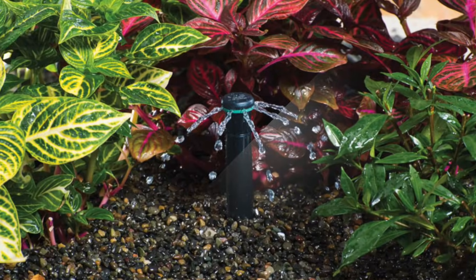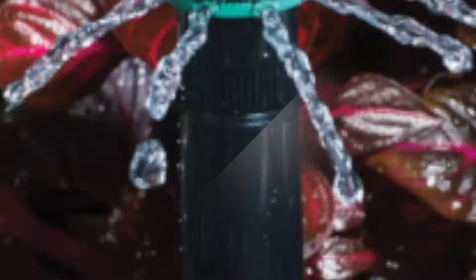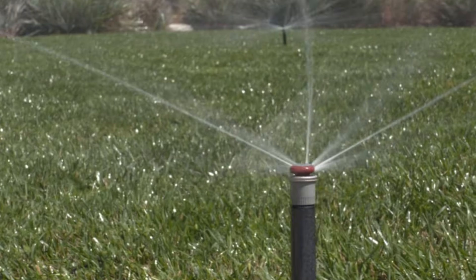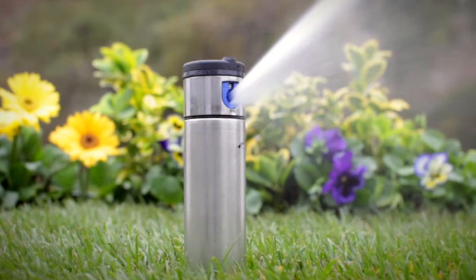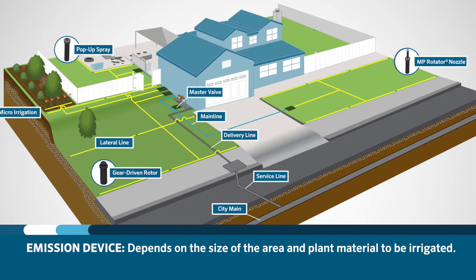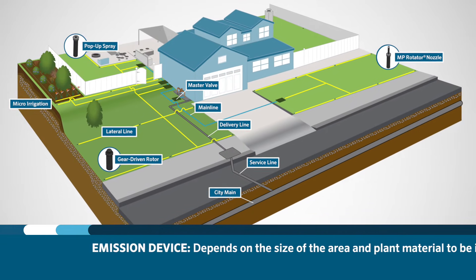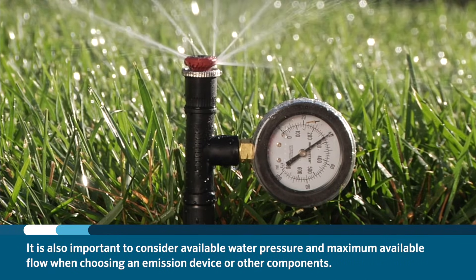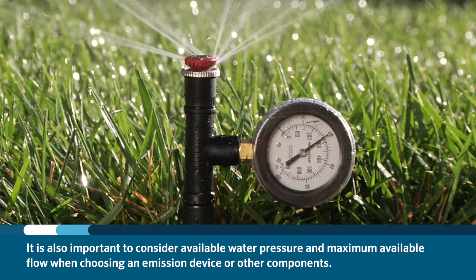Emission devices include, but are not limited to, bubblers, drip, MP rotators, and rotors like the PGP or I-20. The type of device needed is dependent on the size of the area and plant material to be irrigated. It is also important to consider available water pressure and maximum available flow when selecting an emission device or other components.